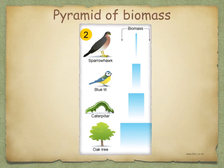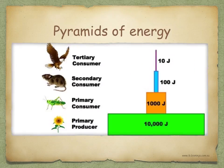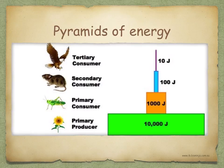Fresh mass is easy to assess, but varying water content makes it unreliable. It would be preferable to use dry mass, but this means the organisms have to be killed and you usually have a small sample which may not be representative. Alternatively, you can use pyramids of energy — collecting the data can be difficult and complex, but the result is a true representation of energy flow through a food web with no anomalies. Data is collected in a given area for a set period of time, usually a year, and results are more reliable than those for biomass, because two organisms of the same dry mass may store different amounts of energy.